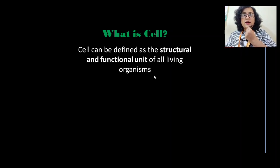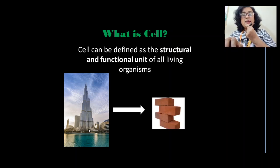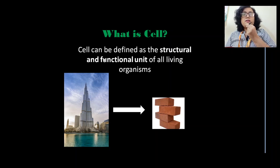Cell is a structural unit. Let's take the example of a building. Here you see a tall building, and there are buildings of different shapes and sizes. The core of any building is the brick — no matter the shape or size, it is made from that simple unit. Similarly, all living organisms, whether as tall as an elephant or as small as an ant, are made up of small units called cells. It is the arrangement of cells that gives the organism its structure.